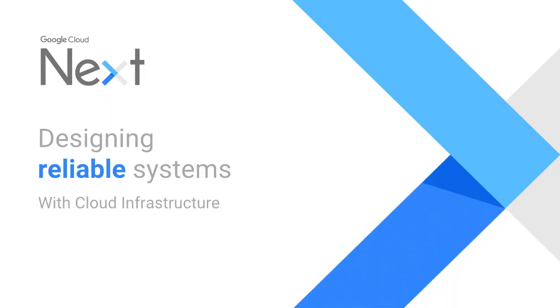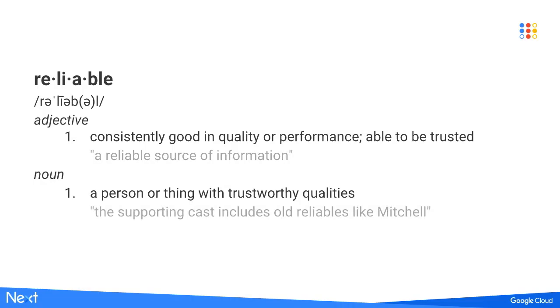If we're going to talk about designing reliable systems, I want to get precise about what we mean by reliable. When you look up the word reliable, you get: 'consistently good in quality or performance' — which sounds like what we're going for. But the more insightful phrase is 'able to be trusted.' Because if your users trust your system, then your system is reliable. If you've earned that trust, your system is reliable.